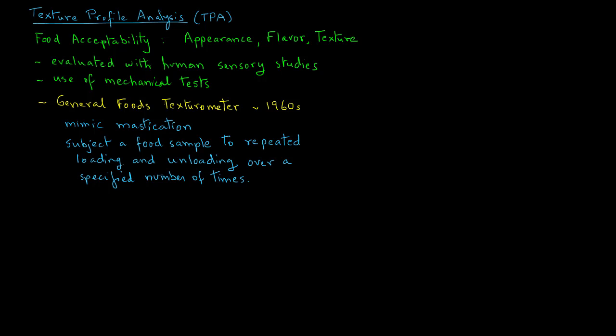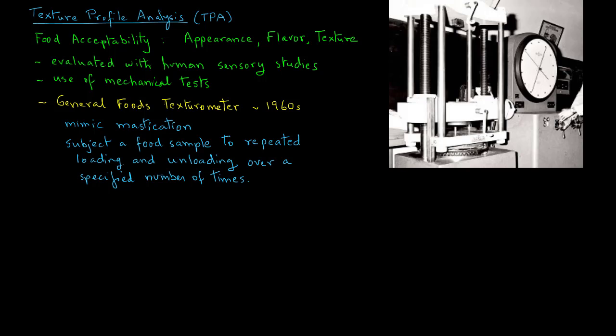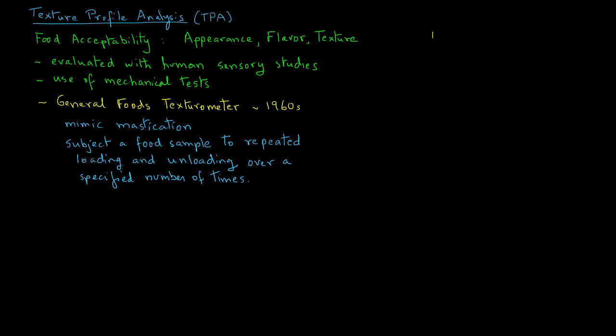The idea behind a texturometer is similar to what is called a universal testing machine, which is often used to determine engineering properties of such materials as metals, wood, concrete, and polymeric materials. Here, there is a picture of an early version of a universal testing machine. In fact, one I used in my own college days.